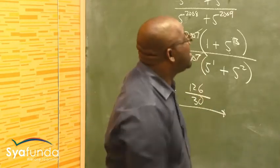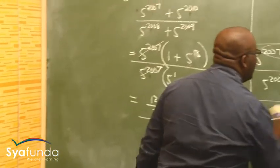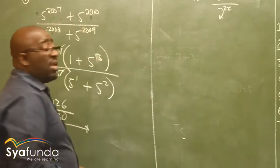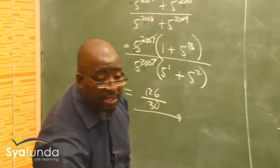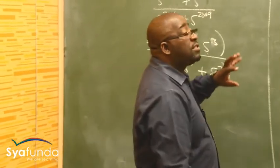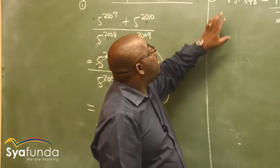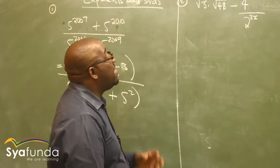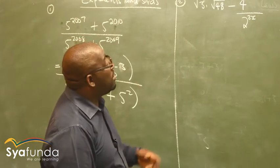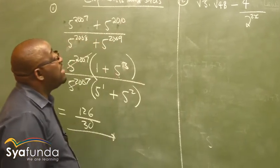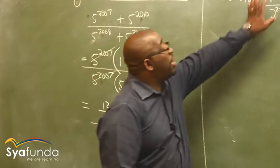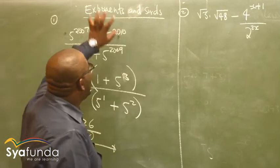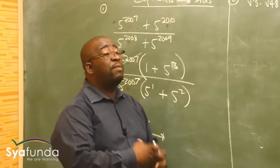Let's look further at how else we can see problems on exponents and surds. This is purely exponents and surds now. Look at this problem — it combines both exponents and surds. A surd is a problem that has a square root. We refer to them as surds. It's either a square root sign or a cube root sign. This part is in exponential form, and this part is in surd form. Hence the topic is exponents and surds, because we can combine them together.